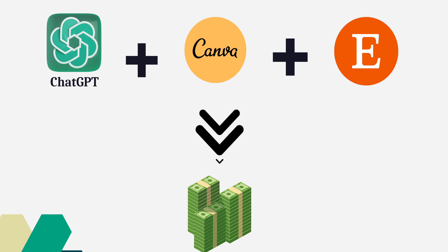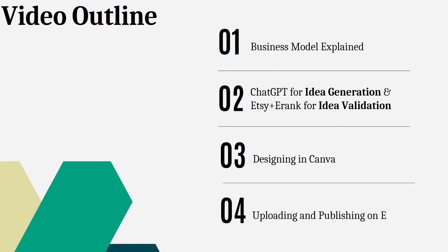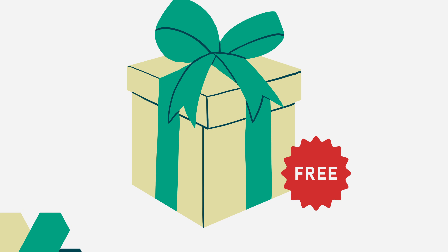Let's look at the steps we'll be covering in this video. First, we'll look at the business model. Then I'll show you how to generate ideas in ChatGPT, validate those ideas on the Etsy platform alongside a research tool called eRank, do the designs in Canva, make mock-ups for your listings, and finally upload and publish your listings on Etsy. As a bonus, I'll be giving away a free template at the end.